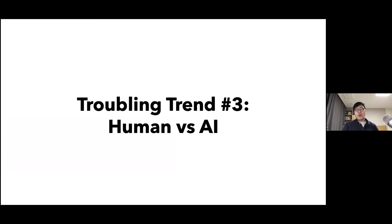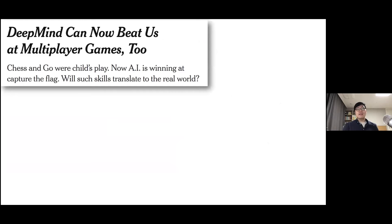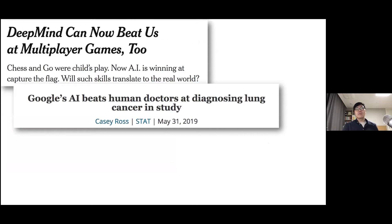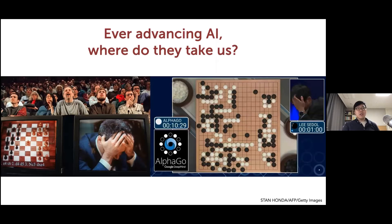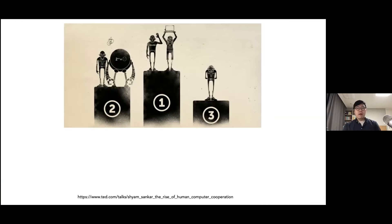The third troubling trend is how we talk about humans and AI as competing entities. We see headlines every day about how DeepMind AI beats humans in games, beats doctors, beats lawyers, beats us in everything. We saw similar cases in narrowly scoped rule-based systems like Go and chess. The human champion gets beaten by state-of-the-art AI and people are scared of what's upcoming. But interestingly, looking at how chess has progressed since AI dominated, there are new tournaments where humans and AI can team up.